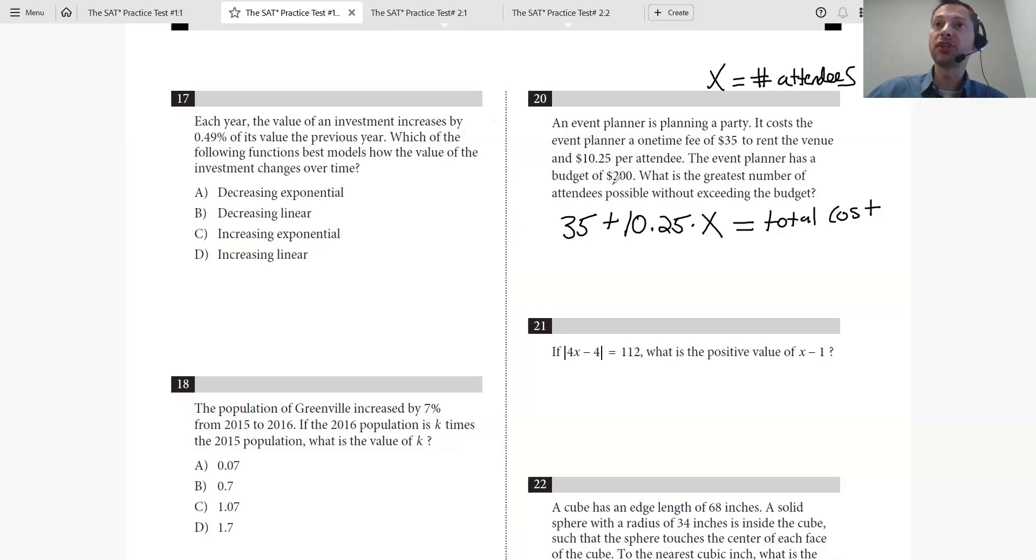The event planner has a budget of $200, so now they're telling us that this total cost is $200. What is the greatest number of attendees possible without exceeding the budget? So now I'm literally solving for X. This is math you've learned in seventh, eighth grade tops.